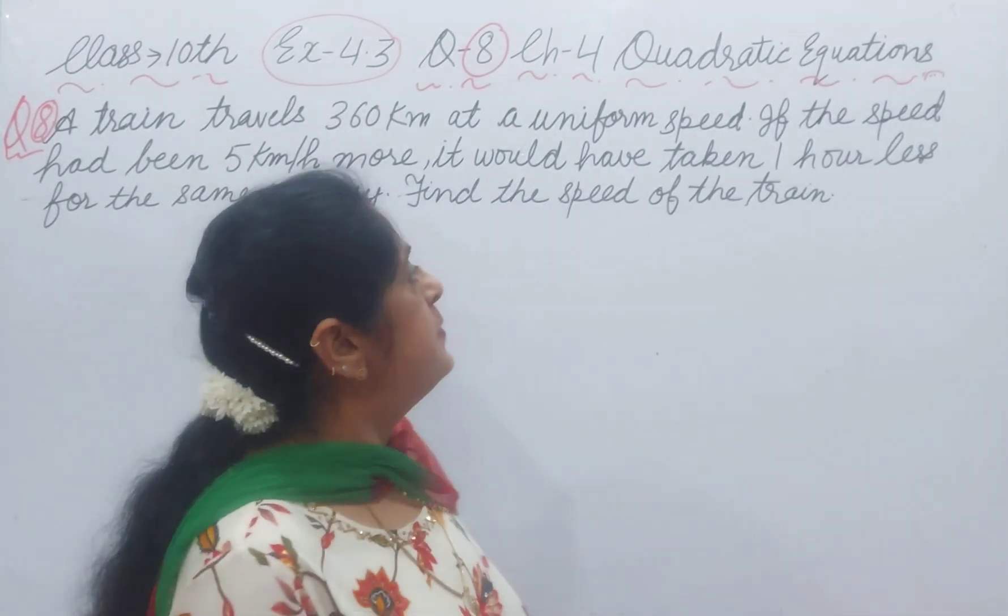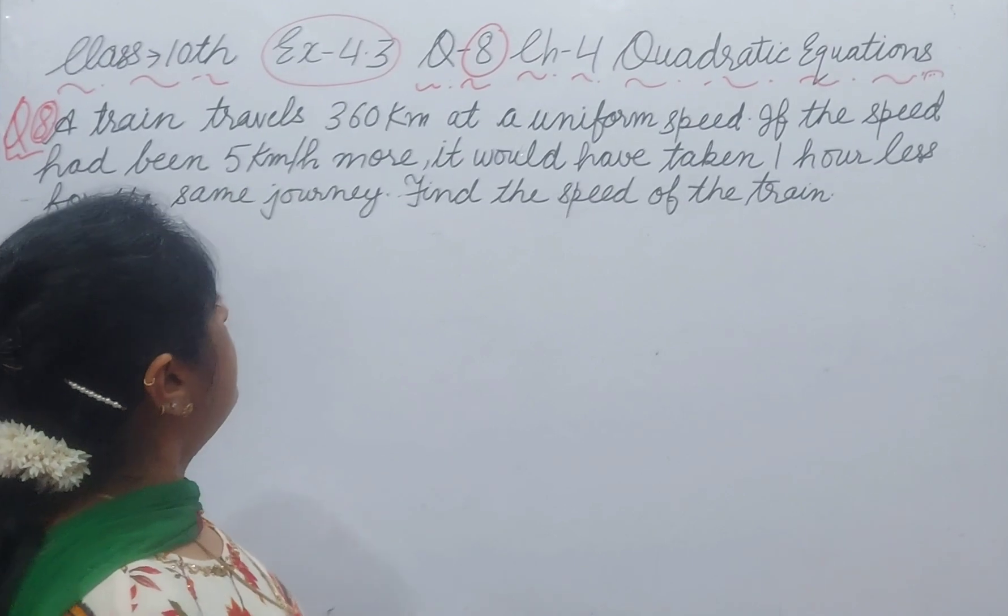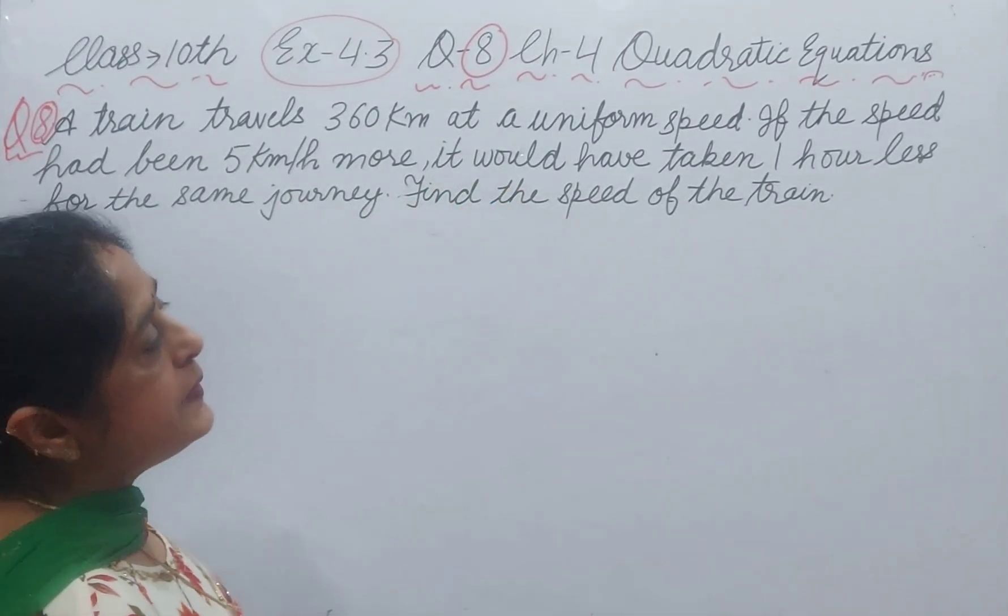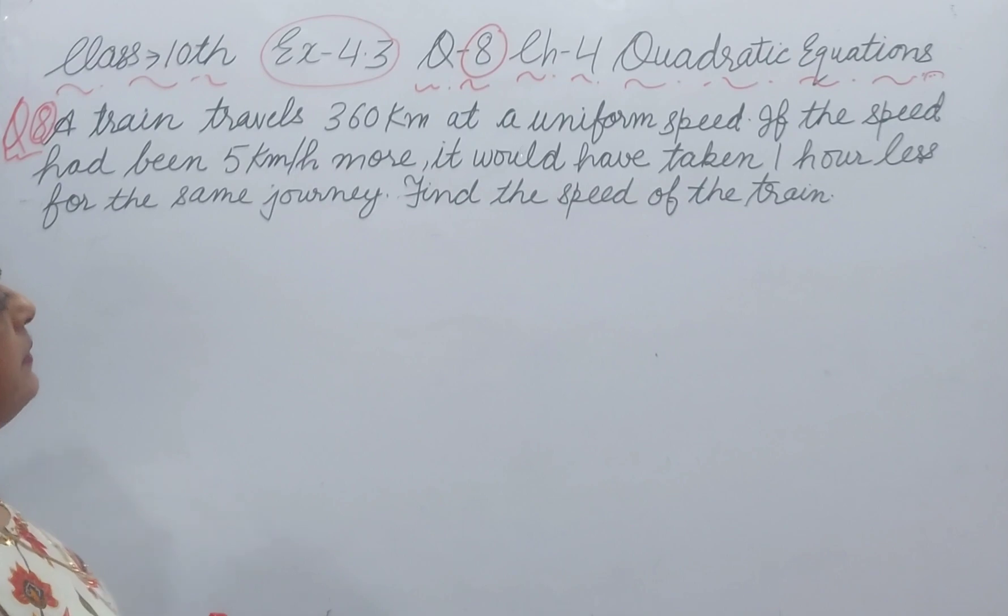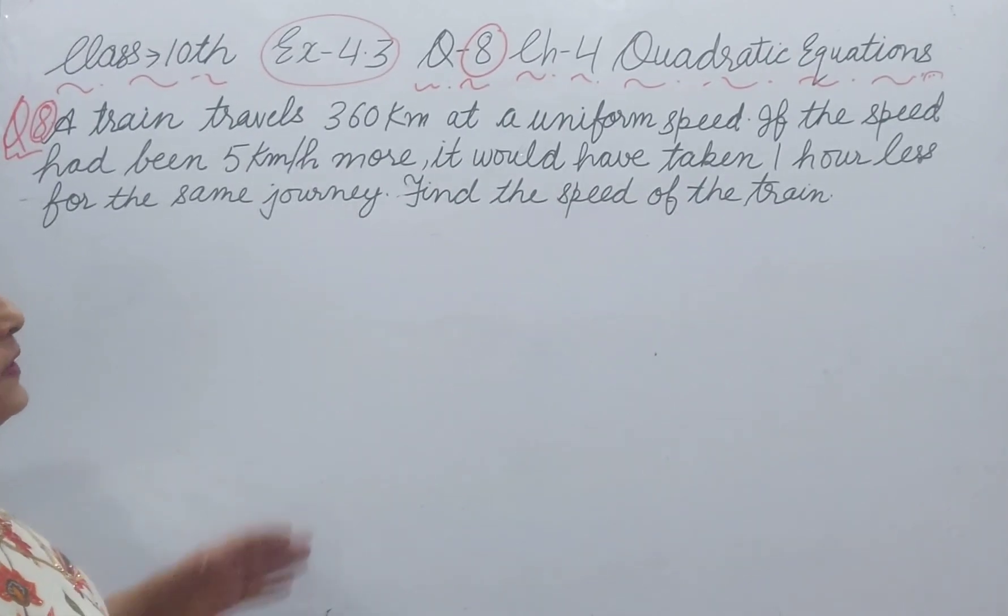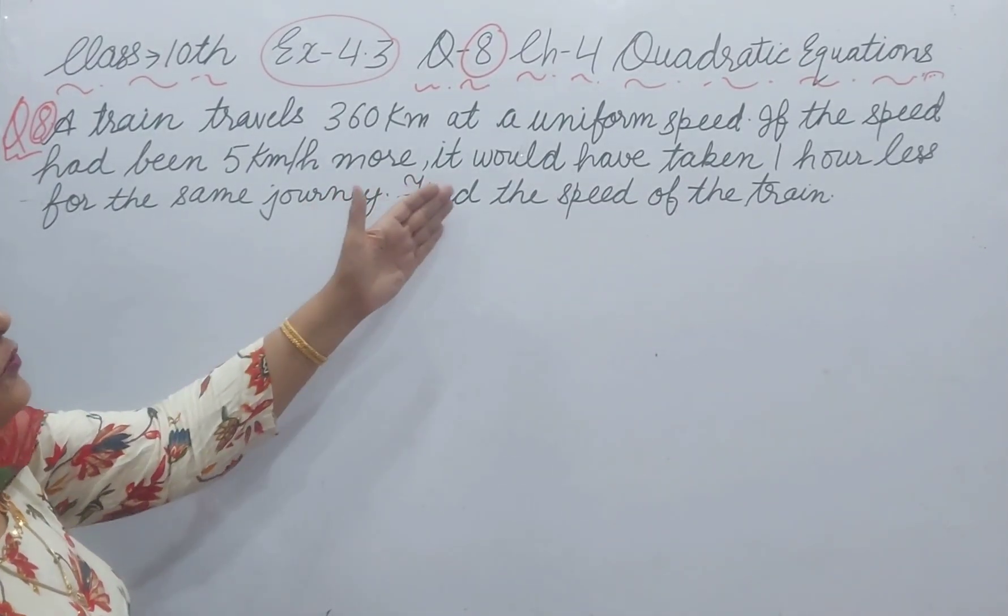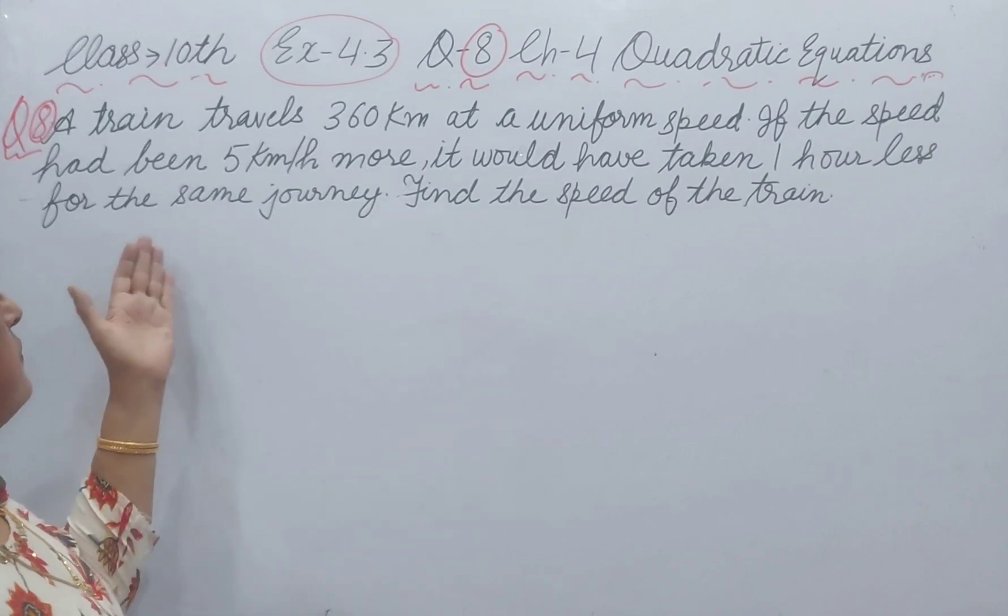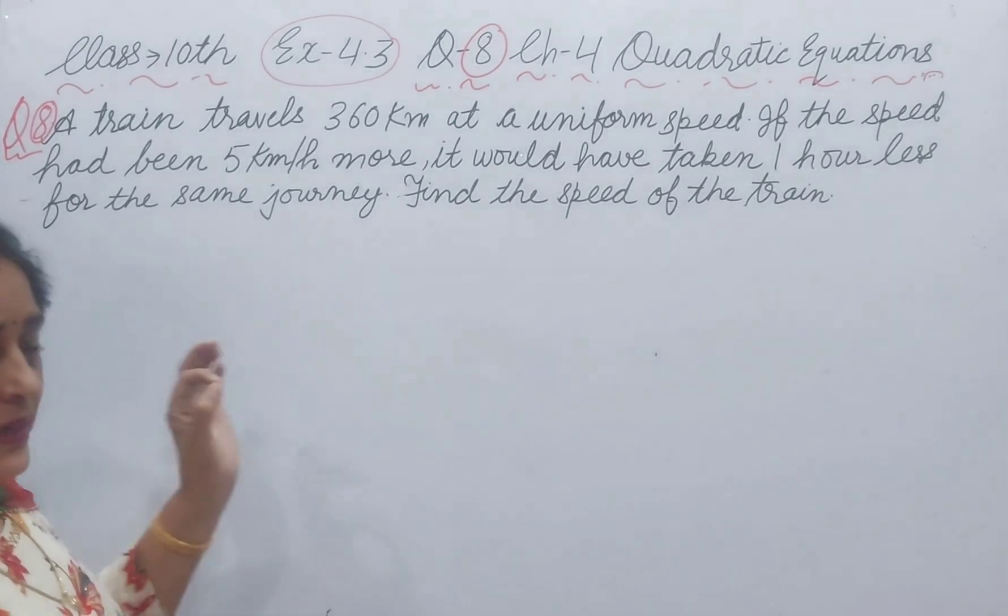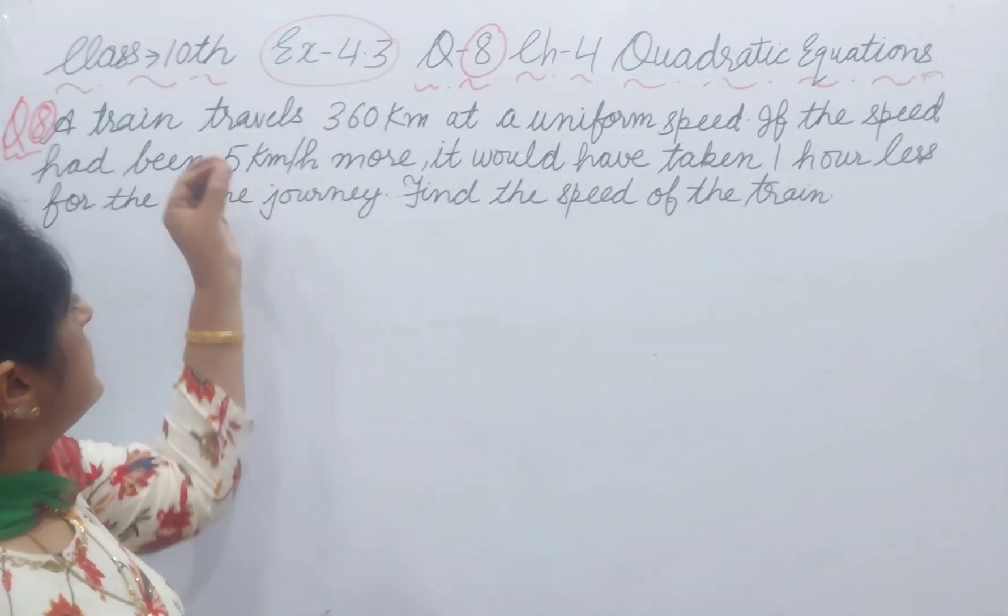First of all read the statement. A train travels 360 km at a uniform speed. If the speed had been 5 km per hour more, it would have taken 1 hour less for the same journey. What is the meaning of this statement?